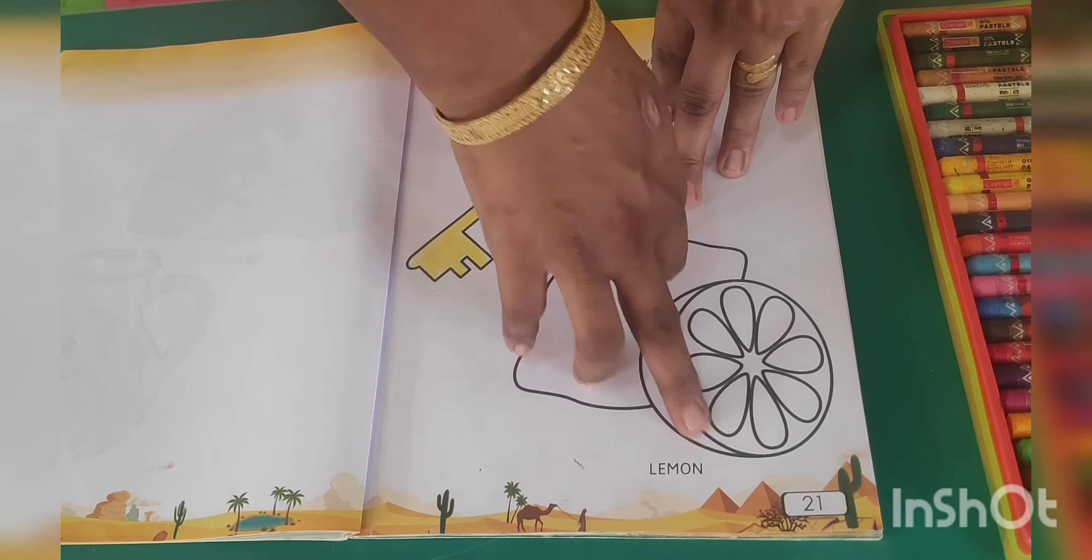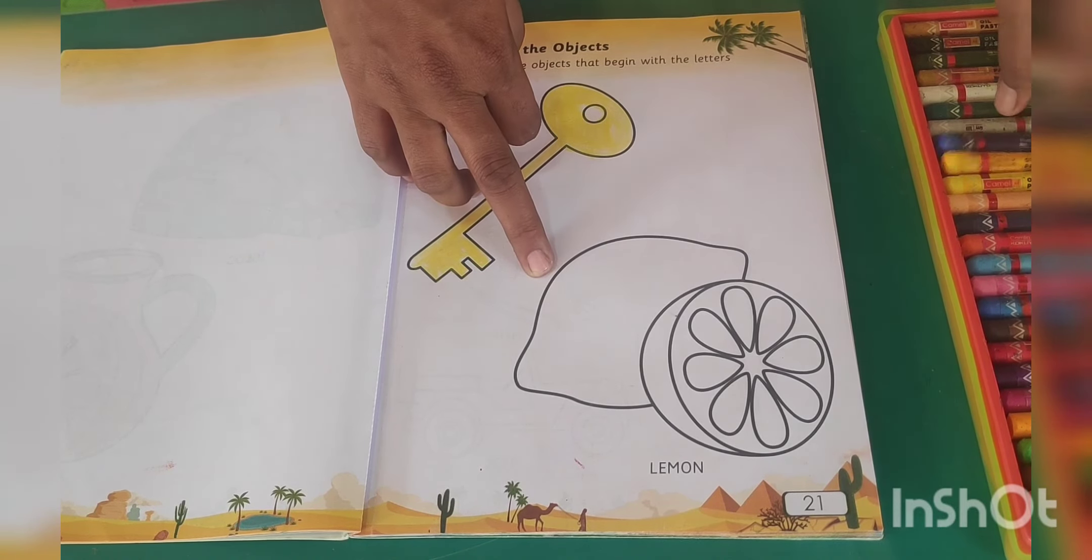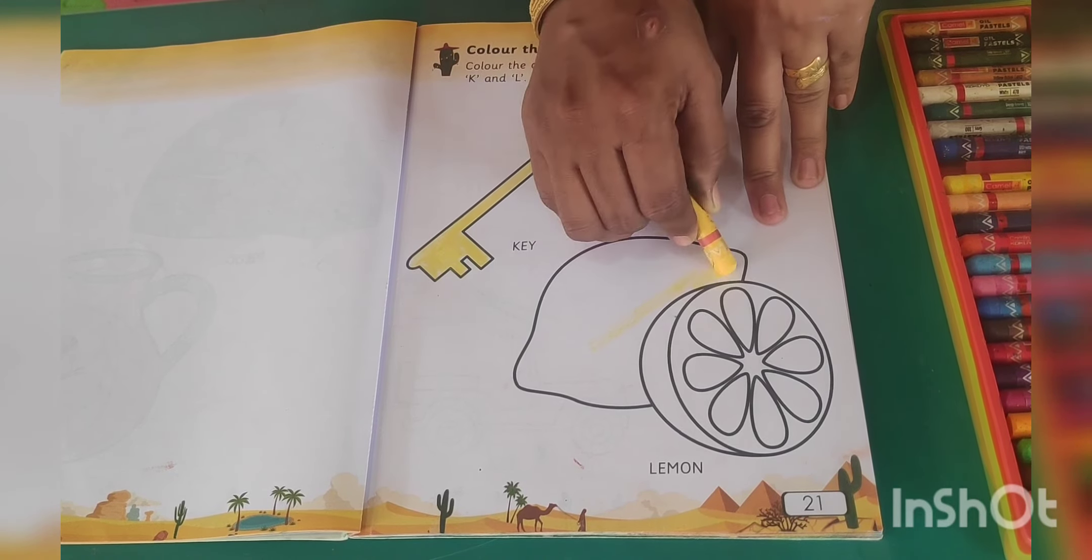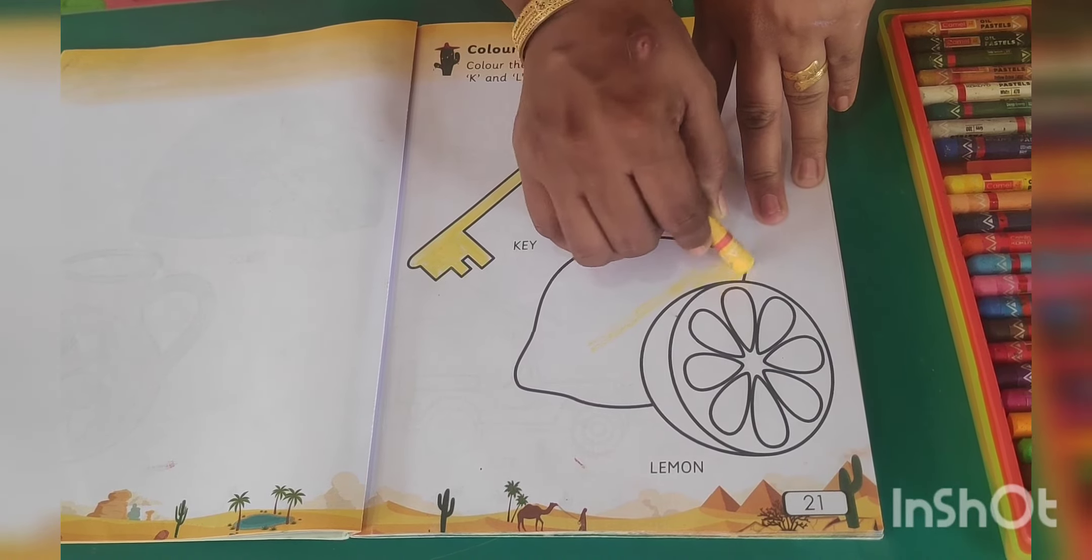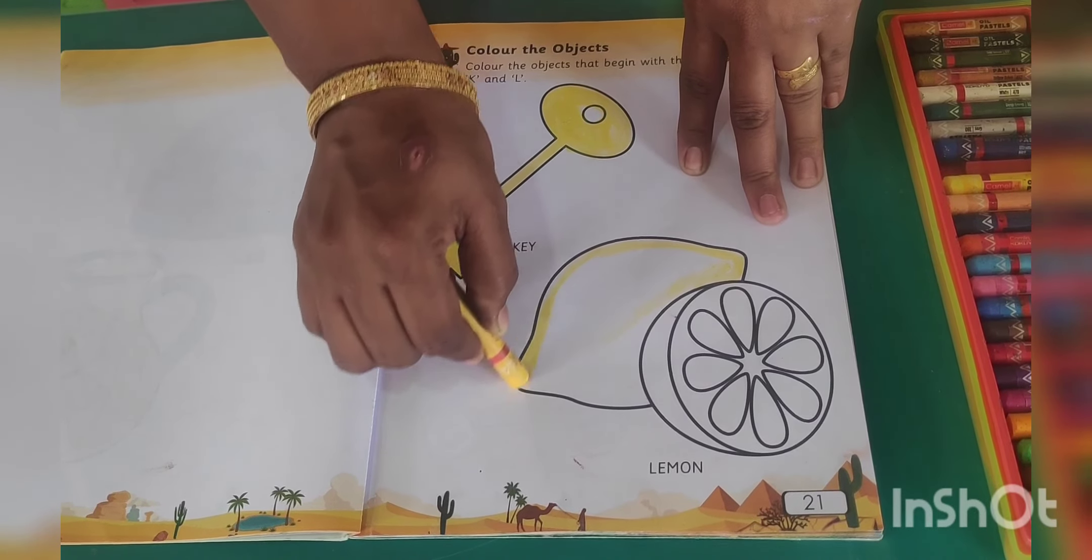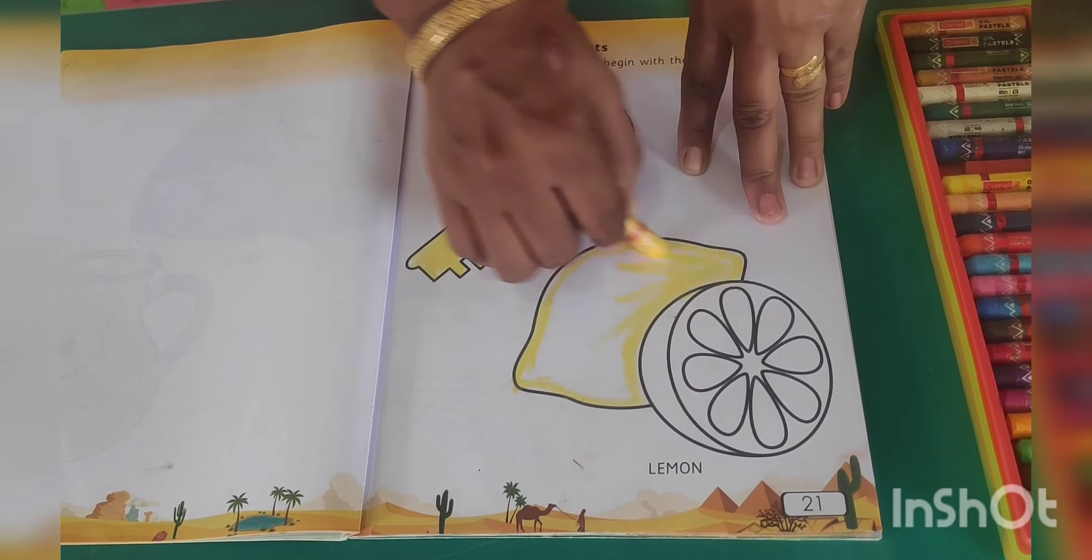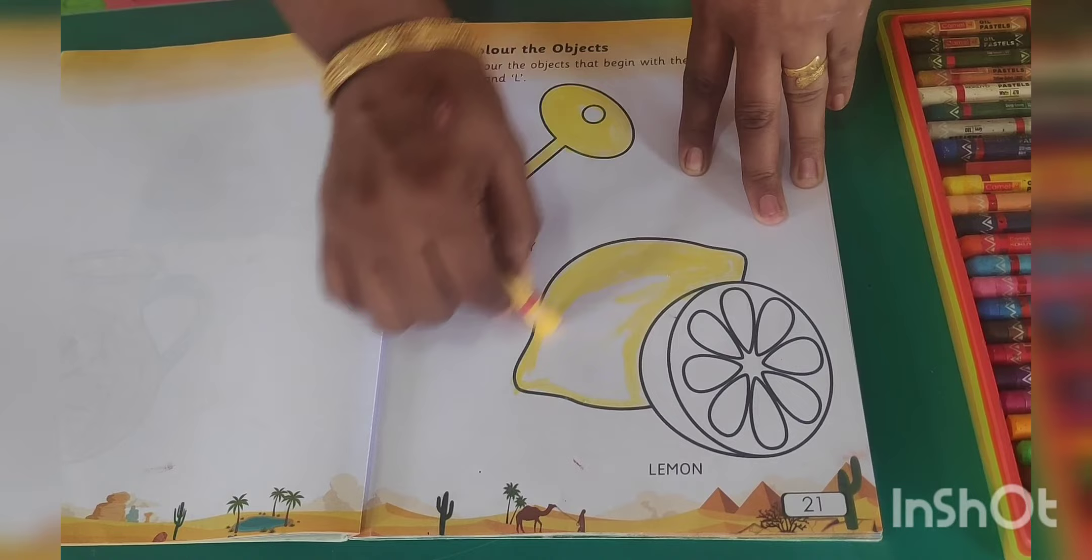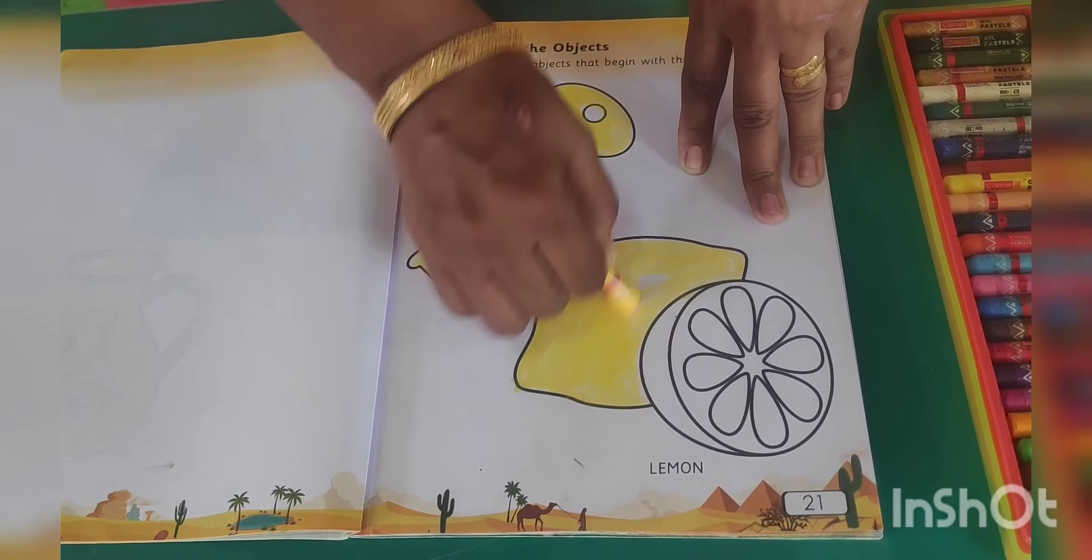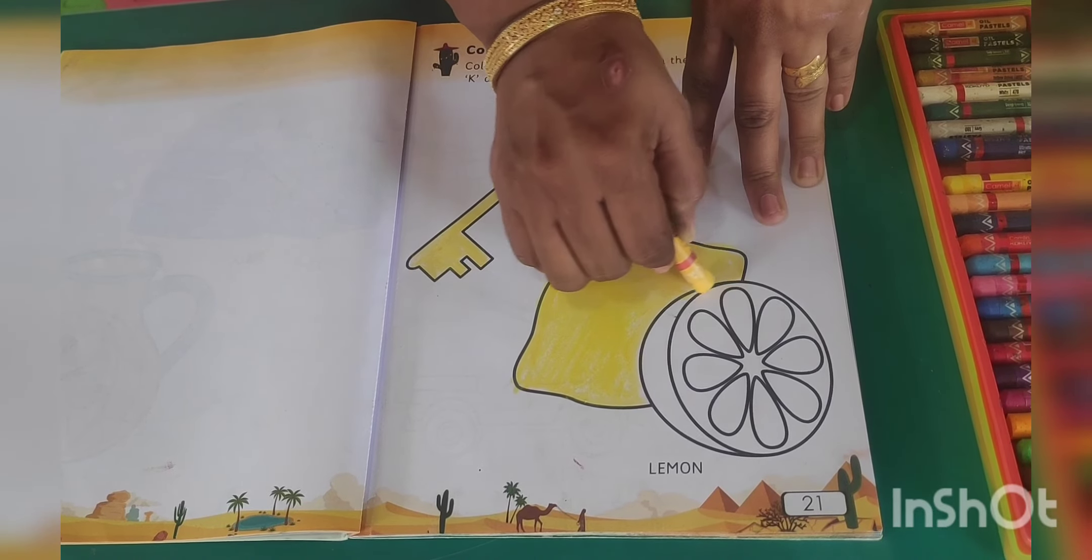L, E, M, O, N. Lemon. And now I am going to colour this object. Object name is lemon. For this I am going to take this colour. Lemon has lemon colour, so I am using this colour.